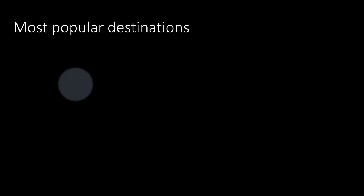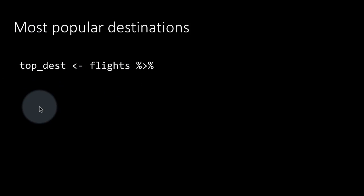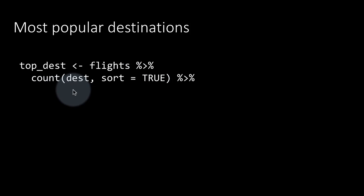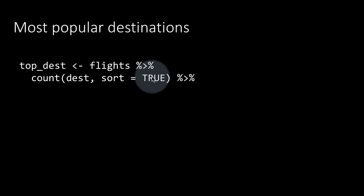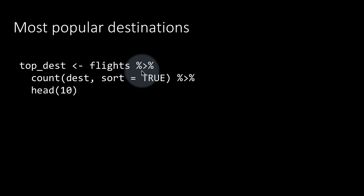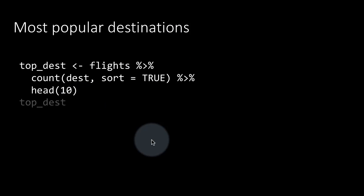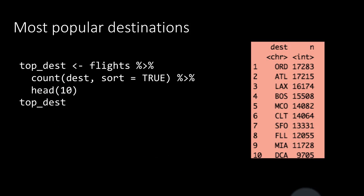Let's find the most popular destinations in terms of number of flights. We create a table called top_dest using flights count(destination, sort = TRUE). The count() function is shorthand for group by destination, then summarize n equals n(). By saying sort = TRUE we arrange in descending order of count, and then we take head(10) to get only the first 10 rows. It turns out Chicago O'Hare has the maximum number of flights, followed by Atlanta, and so on.